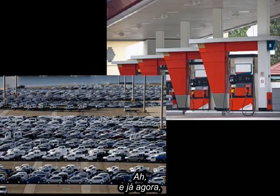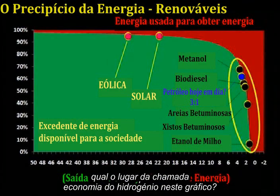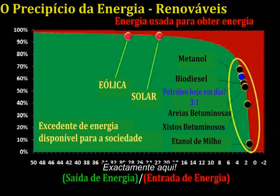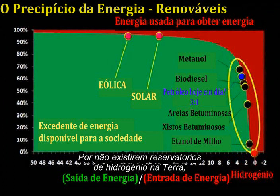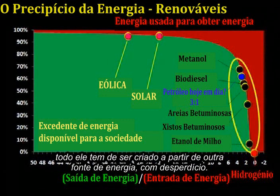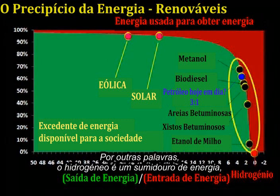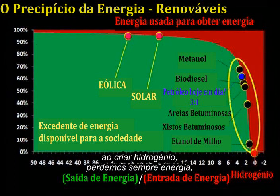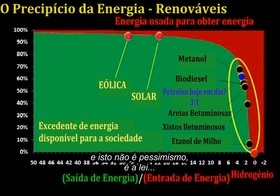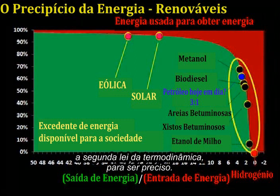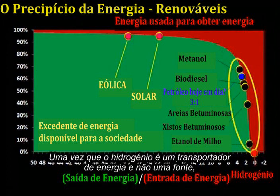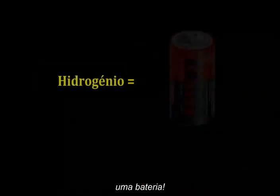And by the way, where's the so-called hydrogen economy on this chart? Right here. Because there are no hydrogen reservoirs anywhere on Earth, every single bit of it has to be created from some other source of energy, at a loss. In other words, hydrogen is an energy sink — in creating hydrogen, we always lose energy, and that's not pessimism, that's the law: the second law of thermodynamics. Because hydrogen is a carrier of energy, not a source, it is more accurately described as a battery.